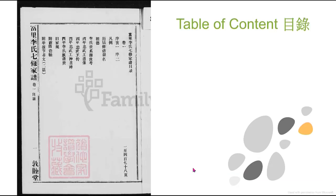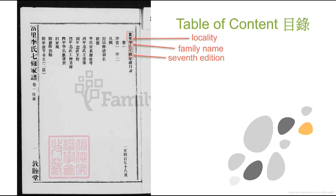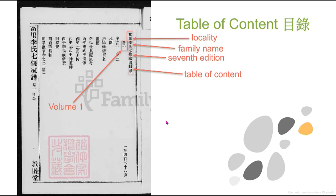Let's start at the very beginning, which is the table of contents — usually found at the beginning of the book. Here we have the locality; in this case it is Fuli, which is an area in Taiwan. Next we have the family name Li. Following that, 'Qi Xiu' meaning this Jiapu is the seventh edition. The next two characters tell us this is the table of contents. If your Jiapu has an extensive amount of information, more than likely you'll have more than one volume — right here indicates you're looking at volume one.